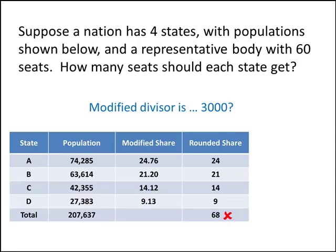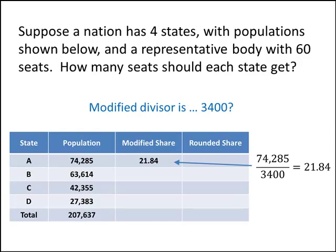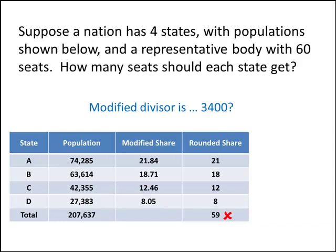Let's try 3400, which is much closer to where we started. Again, we take the population of state A divided by our new modified divisor, giving 21.84, and round down. Doing the same for B, C, and D — dividing each state's population by 3400 and rounding down — gives us only 59 seats, which isn't large enough. We did better than with the original divisor (58 seats), but we still haven't reached 60.